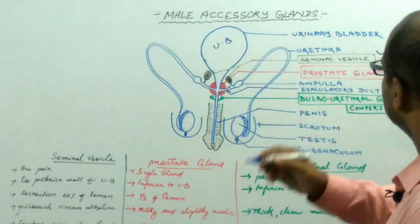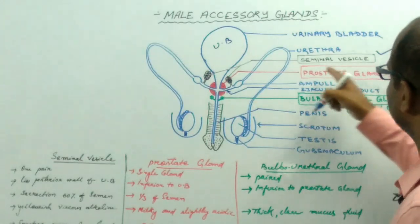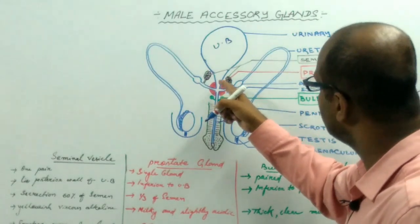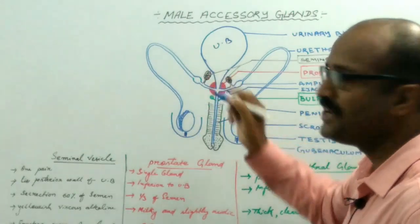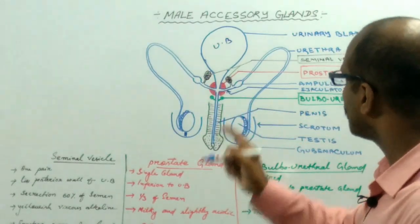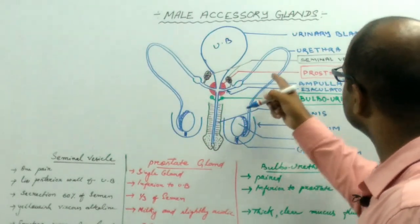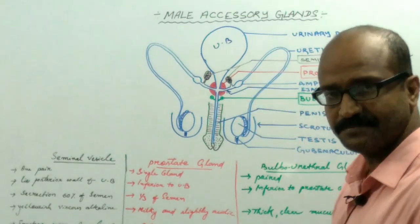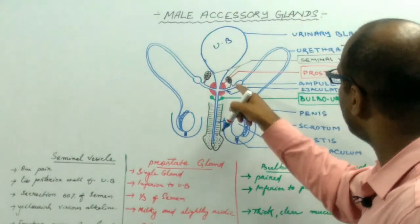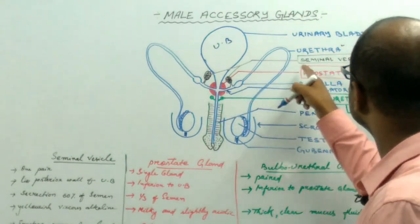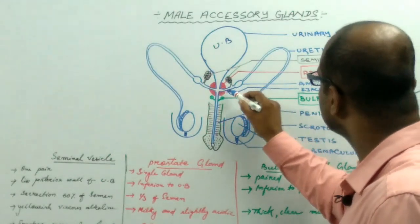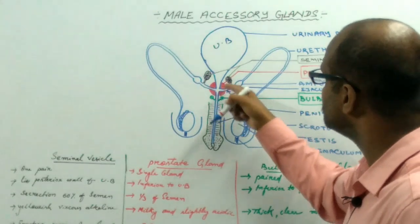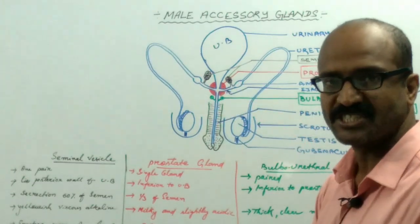Now, coming to the seminal vesicle. The seminal vesicle is present on the posterior side of the urinary bladder. The duct of the seminal vesicle is received by the urethra after the ampulla. After receiving the duct of the seminal vesicle, the urethra forms a short ejaculatory duct which passes into the prostate gland.